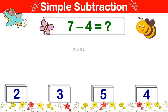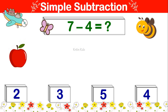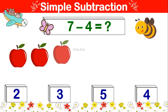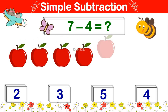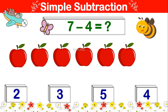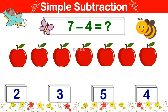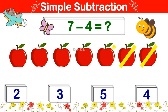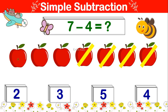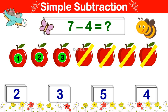7 minus 4 is equal to. Let's take 7 and subtract 4 from it. 1, 2, 3, 4, 5, 6, 7. Now let's subtract 4 from it. 1, 2, 3, 4. Remaining is 1, 2, 3. 7 minus 4 is 3.